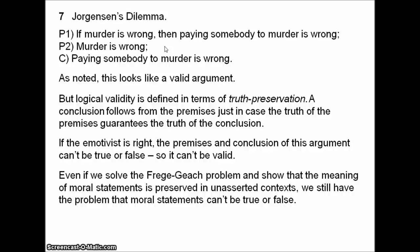One response is to bite the bullet on both problems — accept that the meaning of moral statements changes depending on whether they're asserted or not, and that moral inference is never rational. But this is not a popular response. The more standard response is to preserve the basic ideas of emotivism — that moral statements don't express beliefs and can't be true or false — but interpret them in such a way that the Frege-Geach problem and Jorgensen's dilemma don't arise. That's pretty much what all the work in non-cognitivism since the 1950s has been about. We'll look at that in some later videos, but not today because we've been through enough. Thanks for watching and goodbye.